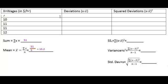Next, we're going to figure out the deviations. Deviations are just the difference between our value and our average. So we're going to do 7 minus 10.2. The first person is making $7 an hour, subtract 10.2, and we get negative 3.2.